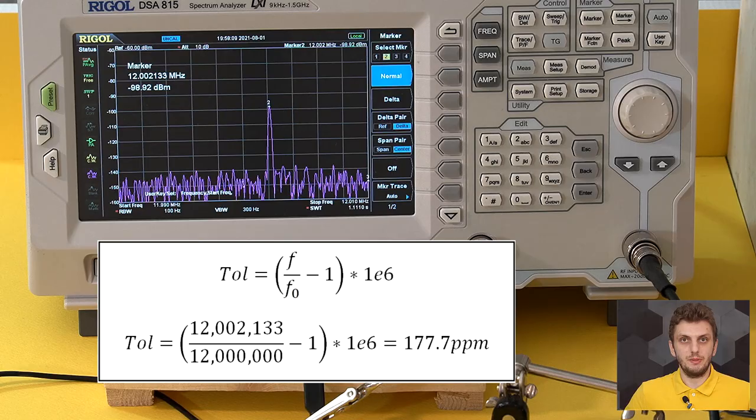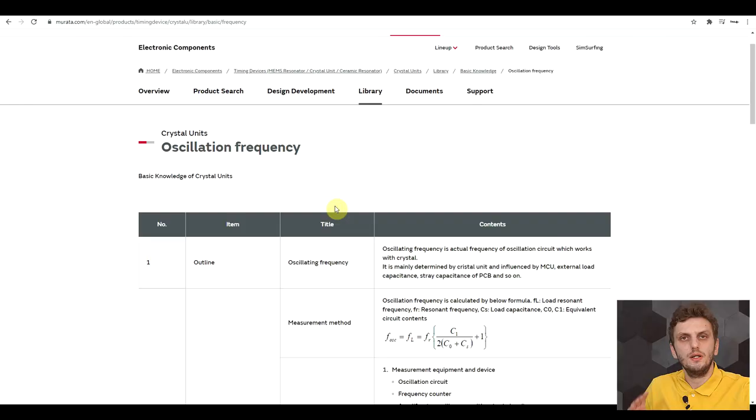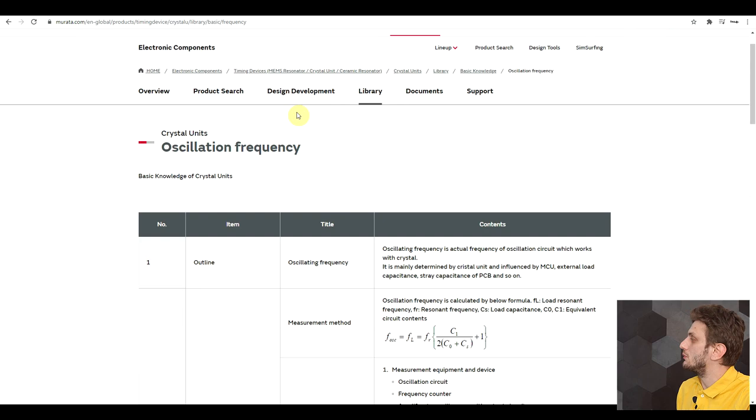Now I found that according to this application note by Murata on oscillation frequency measurement, you should be able to perform this near-field measurement not just with a spectrum analyzer and near-field probe or coax cable, but this should also work with a counter and an amplifier.